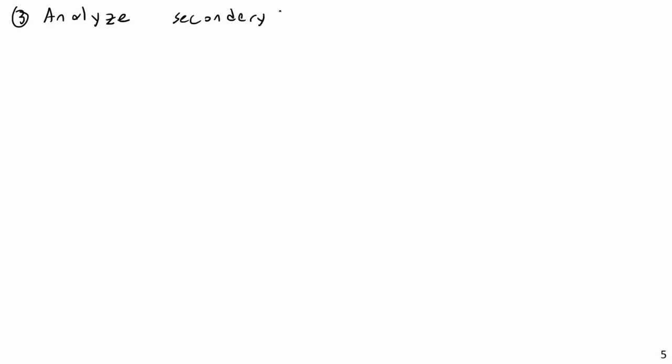Step three is to analyze the secondary beams — plural, not singular. Every time you remove a redundant reaction, you get a corresponding secondary beam with a unit load at that location. Since we removed vertical reactions at B and C, we'll have one secondary beam with a 1-kip unit load at B, and another with a 1-kip unit load at C.